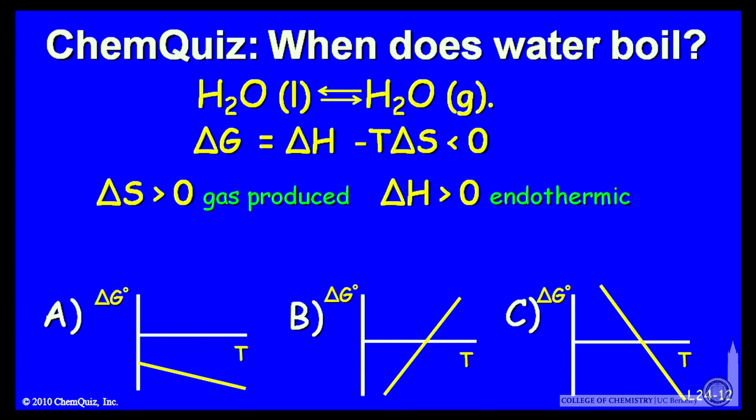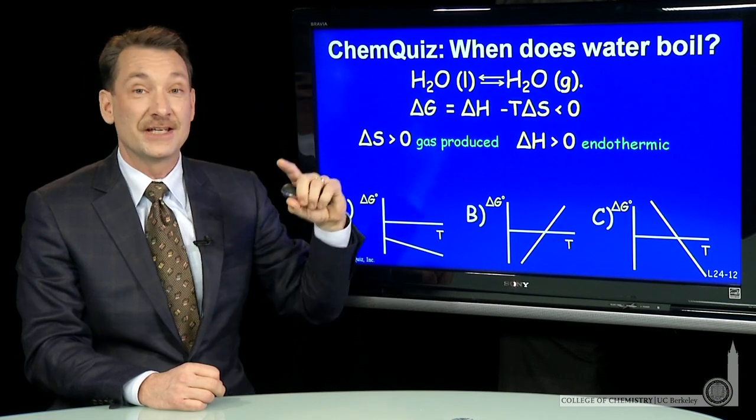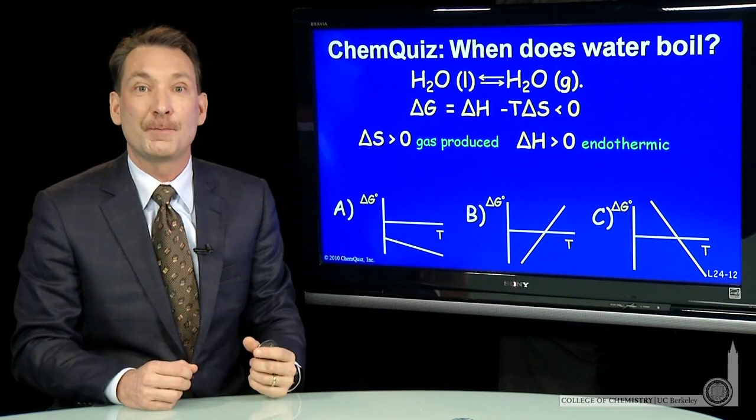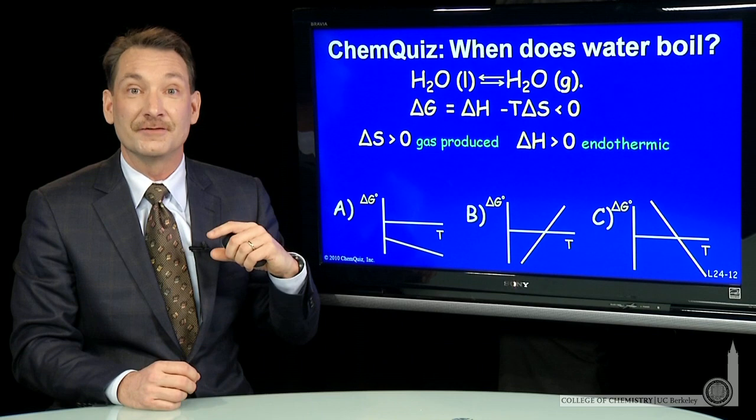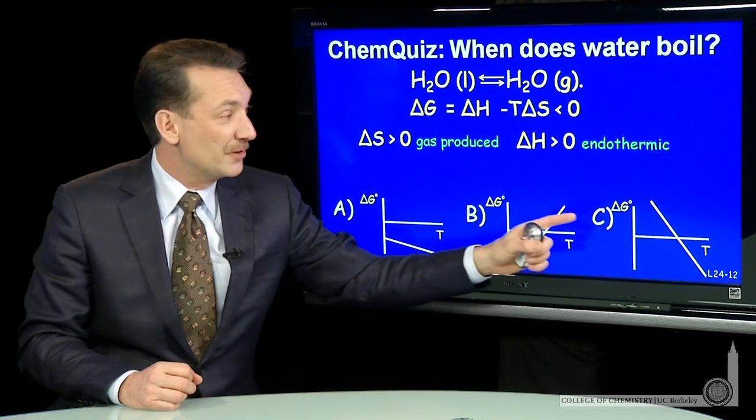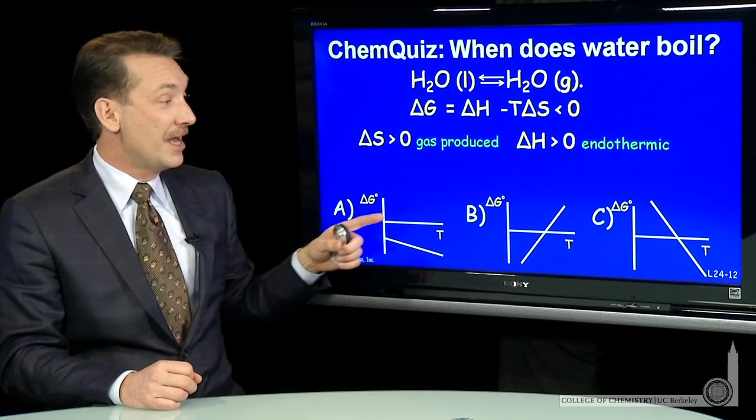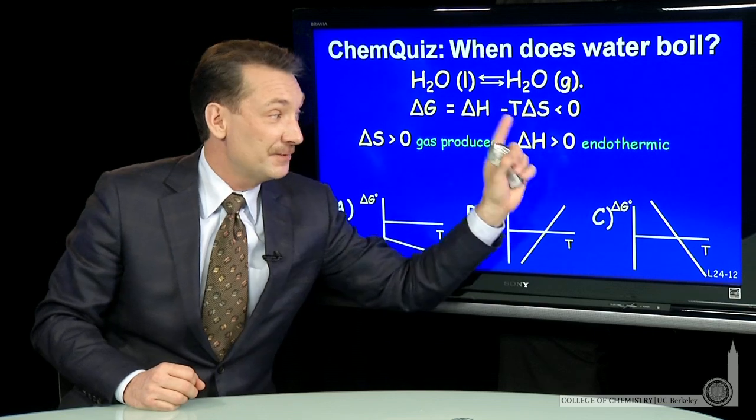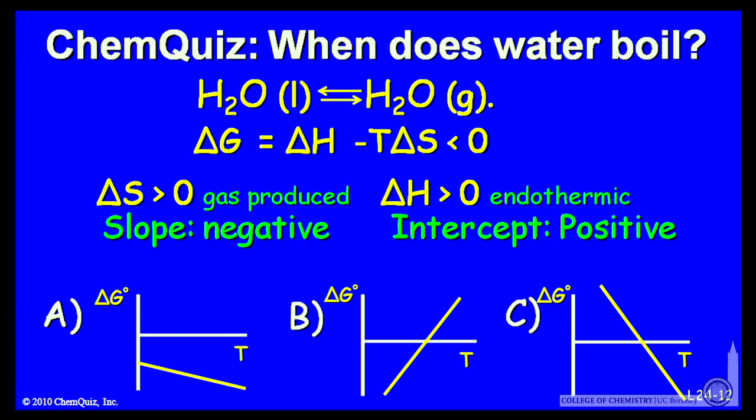Delta H positive, it's an endothermic physical process. We know that. In order for liquid water to go to gaseous water, we have to absorb energy. Absorbing energy, that's a positive delta H. That says the intercept of this line must be positive. So now between C and A, here we have a negative intercept. So C is the only answer. Positive intercept and a negative slope. So C is the correct answer here.